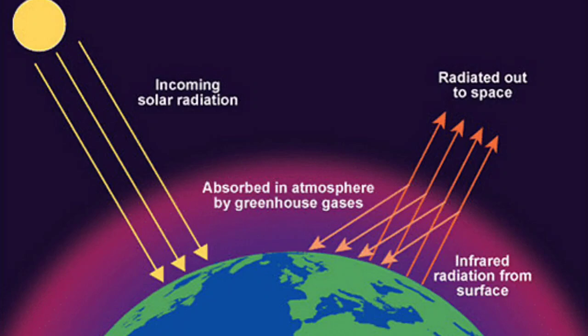The Earth's surface gets heated by the insolation and starts radiating it back to the atmosphere and to space in long waves, which is called terrestrial radiation or the Earth's radiation. This terrestrial radiation is absorbed by the atmospheric gases in larger volumes. So the Earth as a whole does not accumulate or lose heat — it maintains its temperature, neither becoming hot nor cooling down. The temperature of the Earth neither increases nor decreases; it remains static.